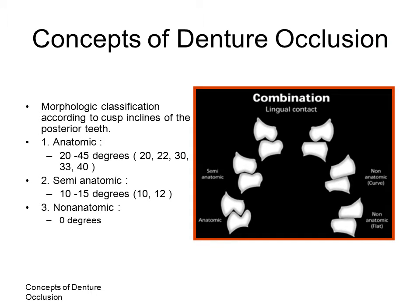Posterior teeth can be found with a variety of cuspal anatomic forms. A basic understanding of various occlusal philosophies may help demystify the variety of posterior tooth forms available.